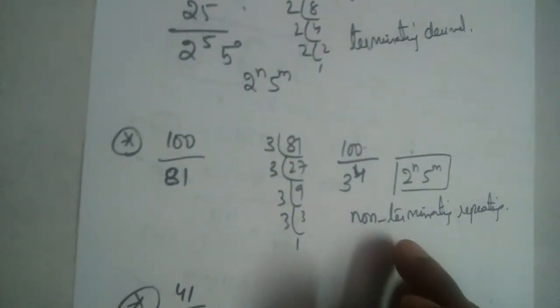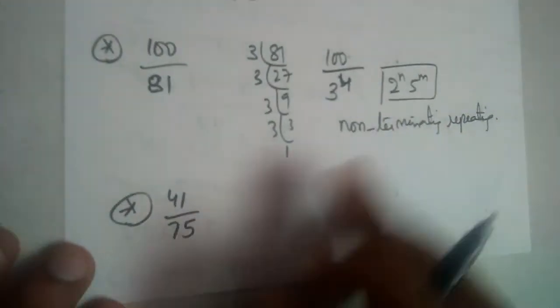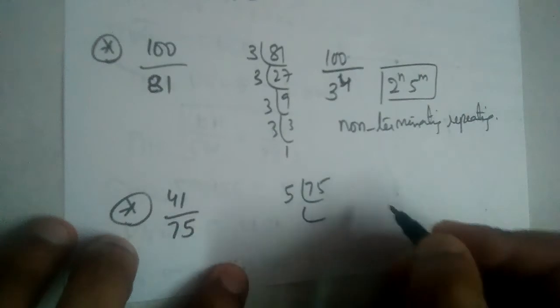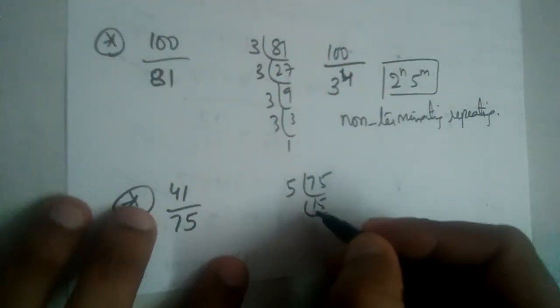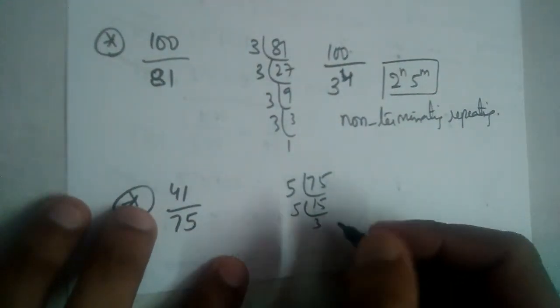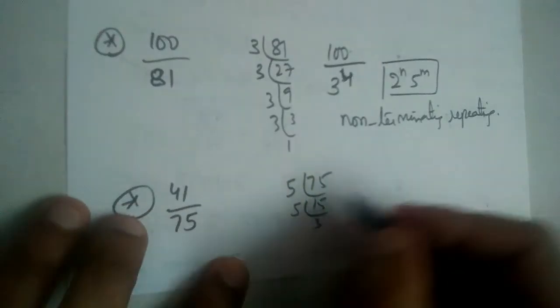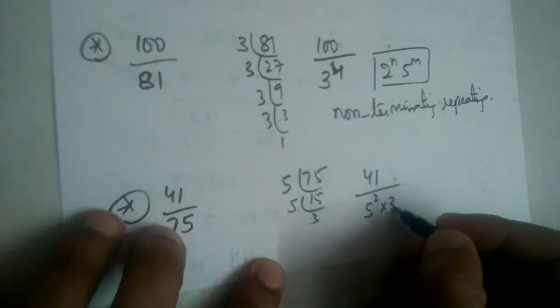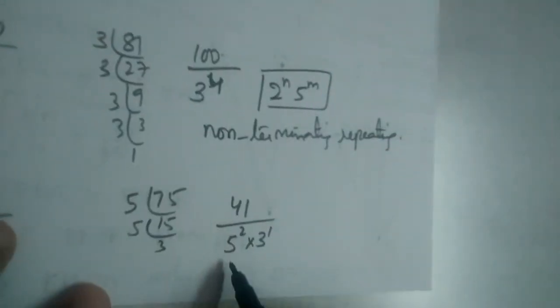Now this is 41 by 75. Let us find prime factors of 75. 5, 15, 5, 3. So we can write this as 41 by 5 square, 3 power 1. See, though we have 5, we have 3 also. We don't need 3 at all.